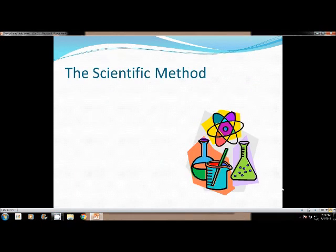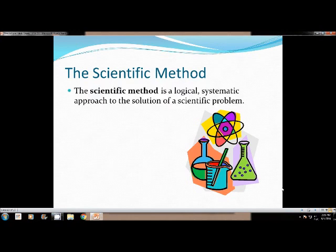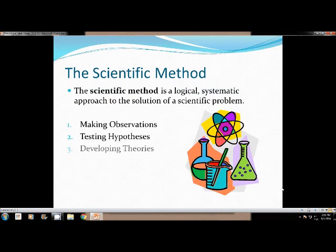With chemistry and with all science, we have the scientific method. My method steps are a little bit shorter than what you might have seen, but it's this logical systematic approach to the solution of a scientific problem. The three steps I have are making observations, testing hypotheses, and developing theories. If you did not have enough time to write these three things down, don't worry because the next couple of slides have these as their titles.